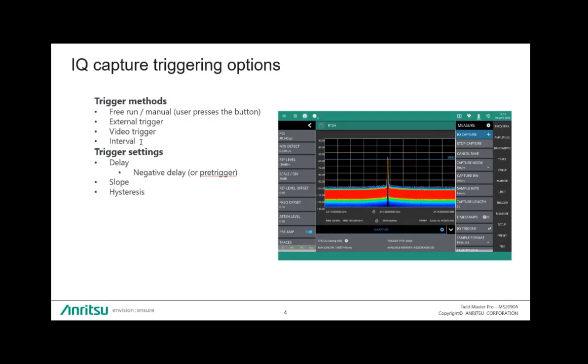You can also set intervals. So if you wanted to do your capturing once an hour, once every five minutes, every ten minutes, you can set that interval, and it will automatically make those captures for you. We also offer a trigger delay, and what's nice here is we offer a negative trigger delay, which is the same as a pre-trigger. So essentially, if you have a signal that you want to capture for 100 milliseconds, but you want to know what happened in the 10 milliseconds before that, then you could set your capture time to 110 milliseconds with a negative 10 millisecond delay, and that will capture that 10 milliseconds before the trigger actually happens.